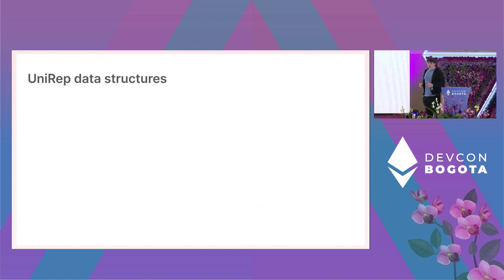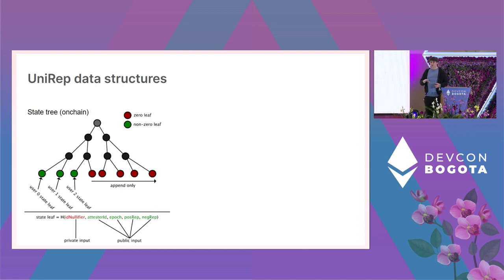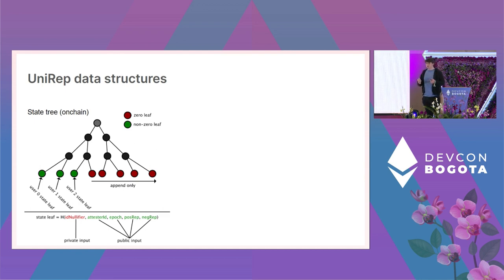Now let's talk about data structures. We have an identity system, but how do we assign reputation and graffiti to users and continue to prove it? We have two structures. First is the state tree — an incremental Merkle tree stored completely on-chain — which tracks whether a user is a member of the current epoch. The leaves are the hash of the private identity nullifier, the attester, the epoch, and the reputation the user has at the start of the epoch. When a user signs up, they insert a leaf with zero positive and negative reputation.